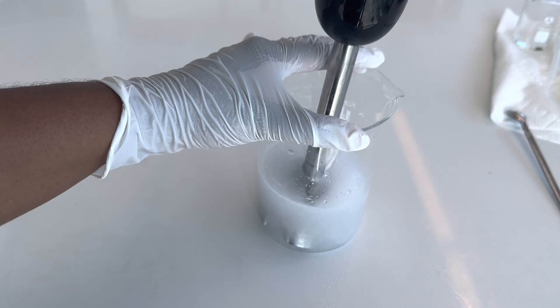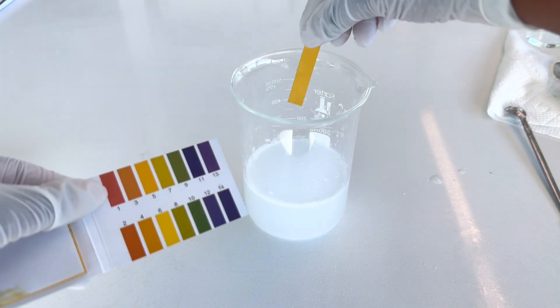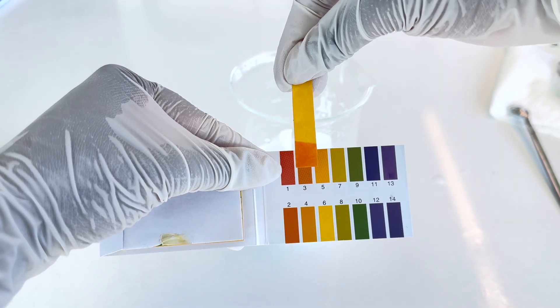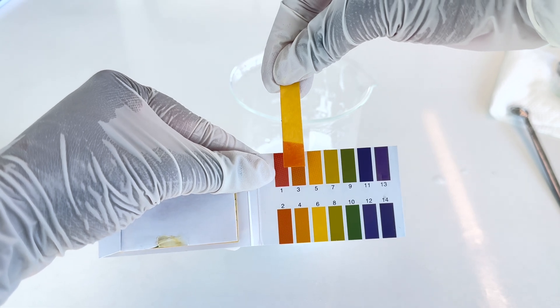Once it's finally hydrated, I let it sit for another five minutes just to settle. I then take the pH again, and due to Carbomer's acidic nature, the pH is now around 2 to 3.